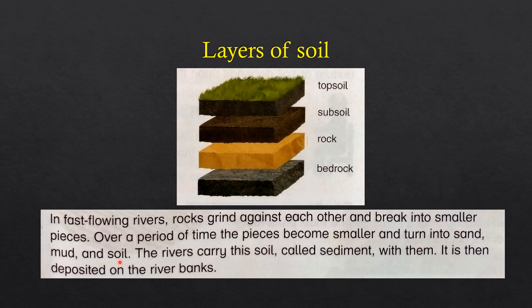The rocks become sand, mud, and soil. The rivers carry this soil — called sediment — with them. The sediment, which contains sand, mud, or soil, is carried by the river's current and then deposited on the riverbank, where the water leaves it behind.